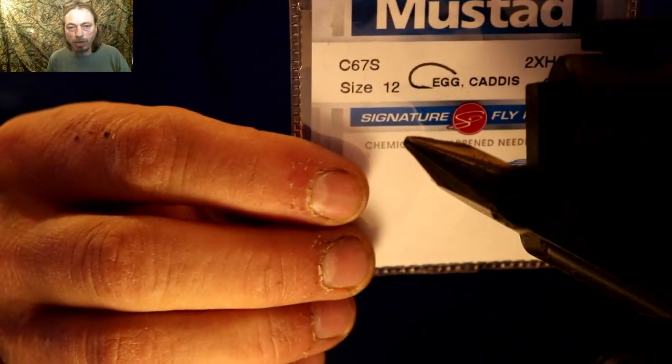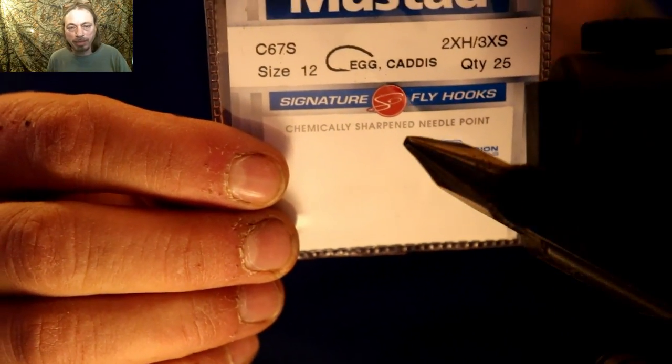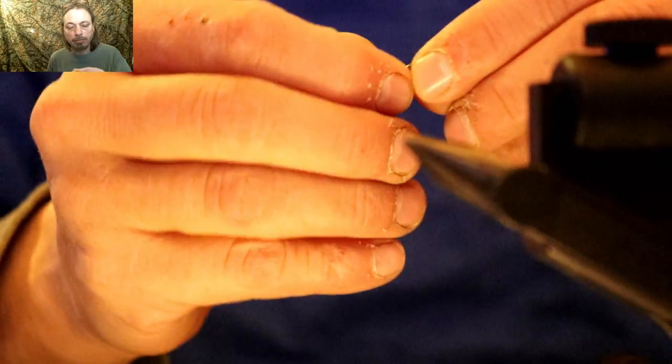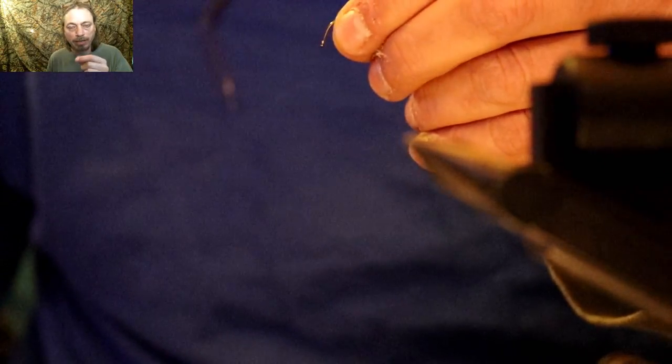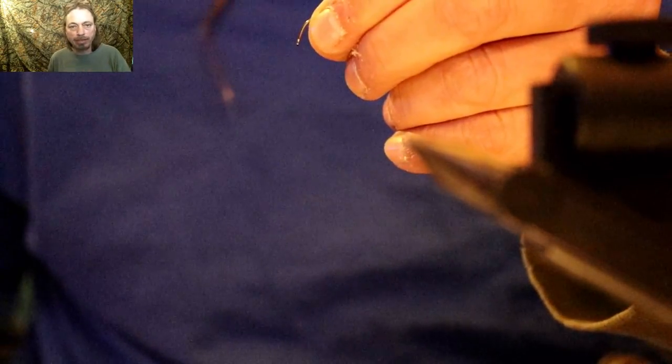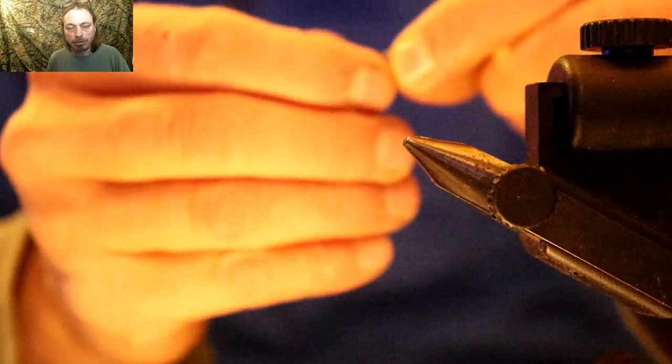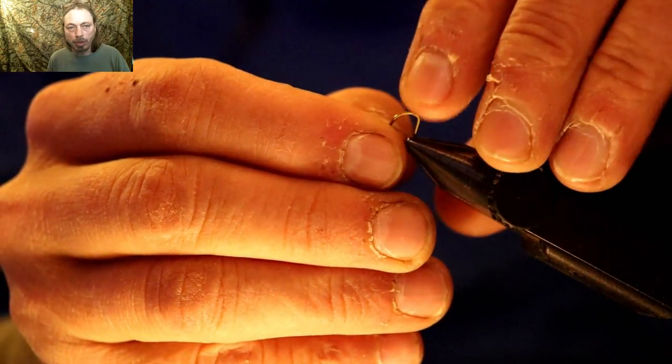We're gonna take a size 12 caddis egg hook, but the shank's a little bit thicker and it helps the fly sink. We're not gonna add no weight to it. I'm gonna tie on a size 12 caddis hook and debarb it.